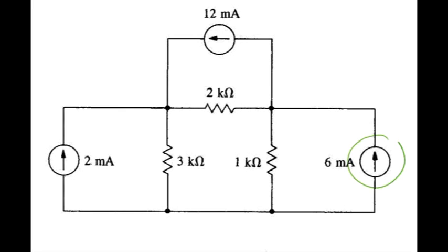Here we look for the power associated with the six milliamp source. We already know its current, so if we can find the voltage across that device we can use power equals voltage times current.